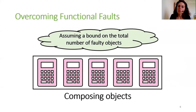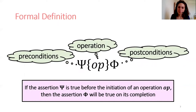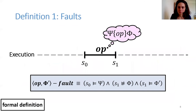Suppose there is a bound f on the total number of faulty calculators in our example. We can implement a reliable calculator from 2f plus one calculators and always output the majority. I am now going to formally present our model using three key definitions. We use the standard set of correctness conditions for operations according to Hoare logic. We use this triplet of op, psi, and phi to express an operation and its pre- and postconditions respectively. Meaning as long as the assertion psi is true before op is invoked, it is guaranteed that the assertion phi will be true after op completes.